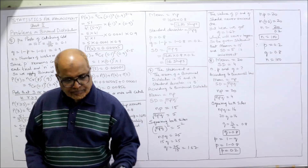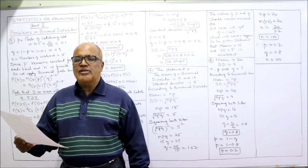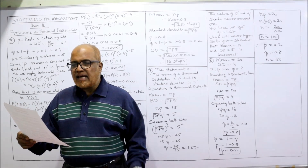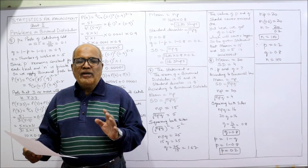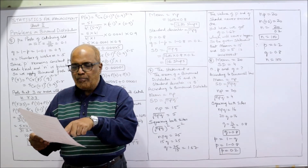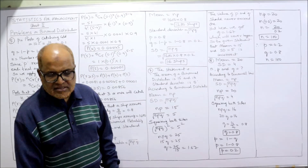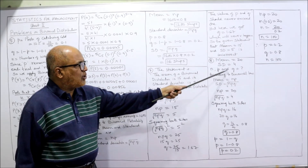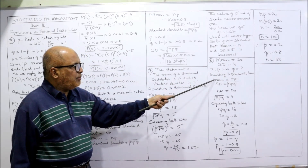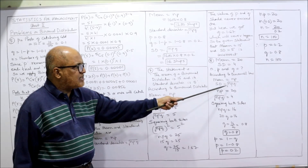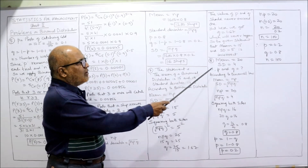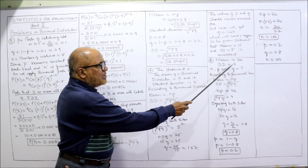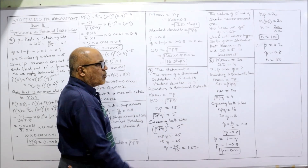Problem number eight: The mean of a binomial distribution is 20 and the standard deviation is 4. Calculate N, P, and Q. According to binomial distribution, mean = NP and standard deviation = √(NPQ). From the given values, NP = 20 and √(NPQ) = 4.